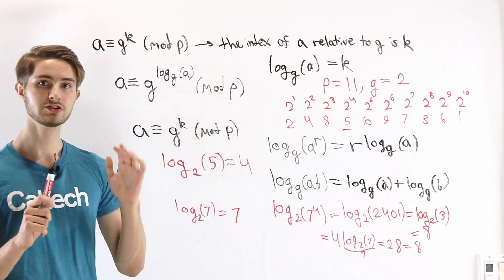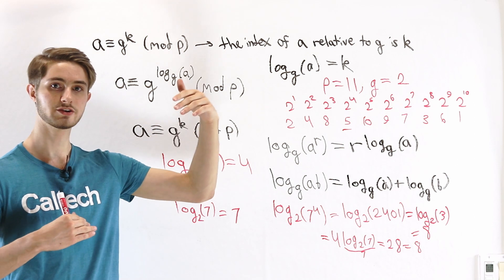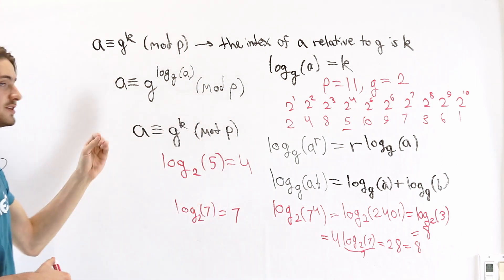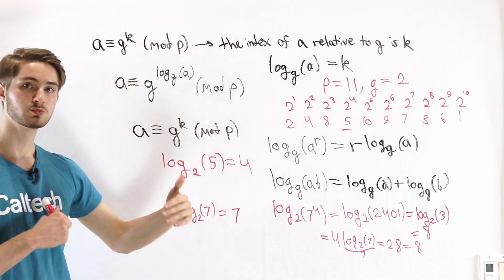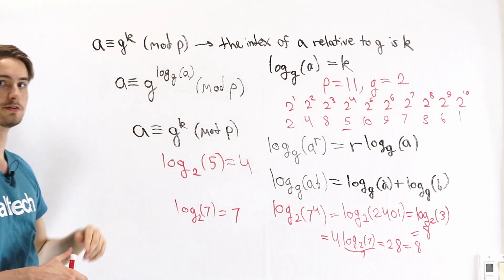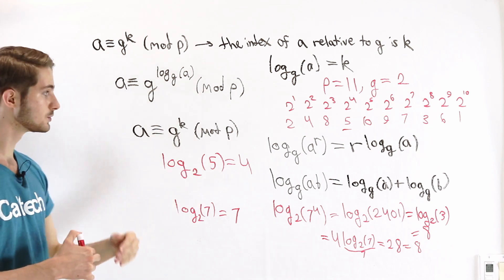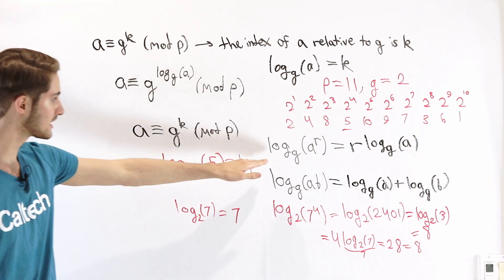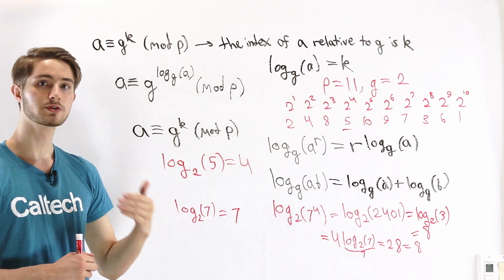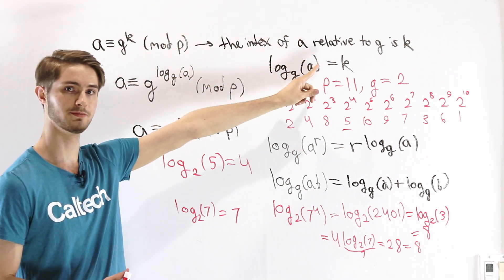Because the powers of a primitive root give us all of the possible residues mod a prime number except for 0, we can express any of those numbers mod p as a power of that primitive root. That lets us use many of the rules we would expect from the algebra of logarithms in order to find indices relative to that primitive root.